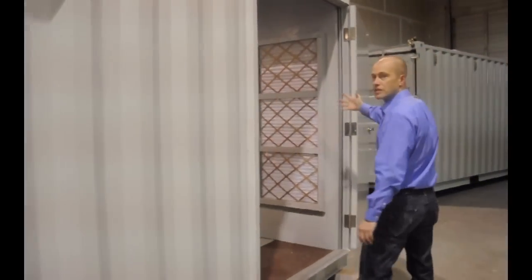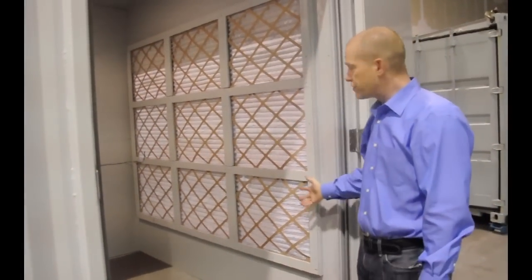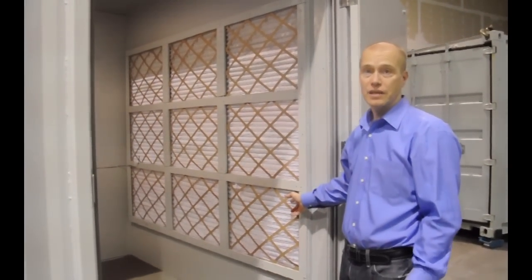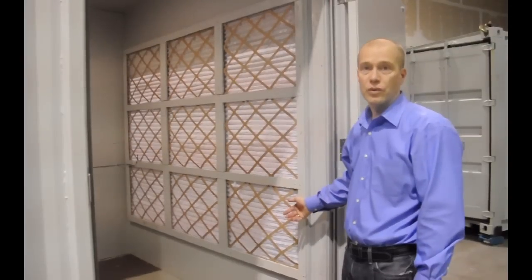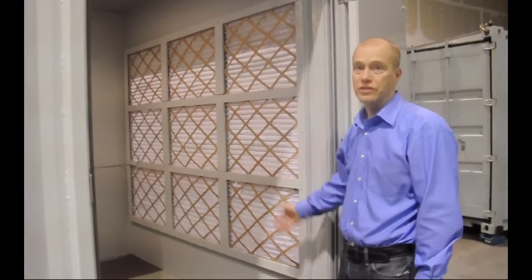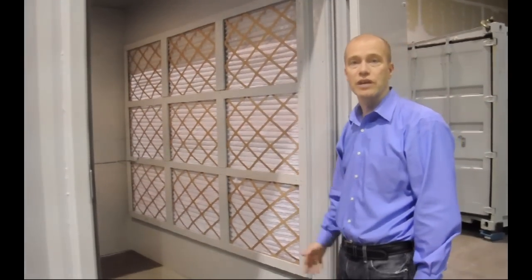This side here is the intake, the air filter intake. We went with very consumer level filters because they're easy to find and they're cheap. Anyone can go to a home hardware store and buy these filters. There's 25 inch square filters and you can choose whatever filter level that you want.